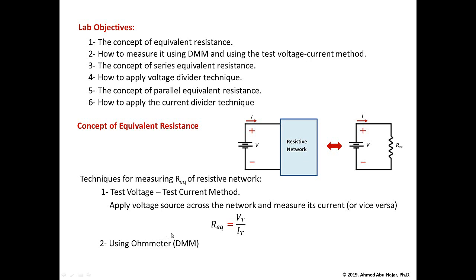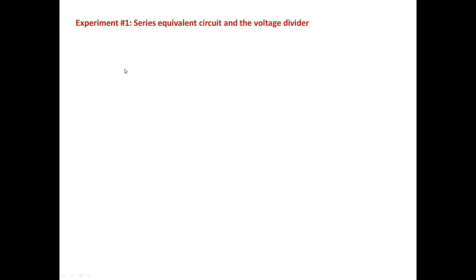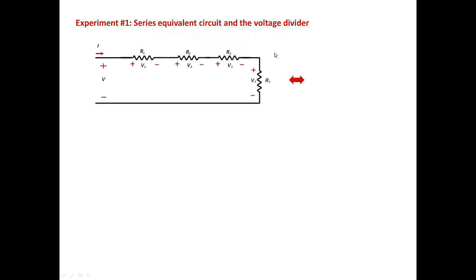This lab has three experiments. The first experiment is to validate the series equivalent resistance and the voltage divider. Assume we have four resistors — R1, R2, R3, R4 — connected in series, which will have one equivalent resistance.